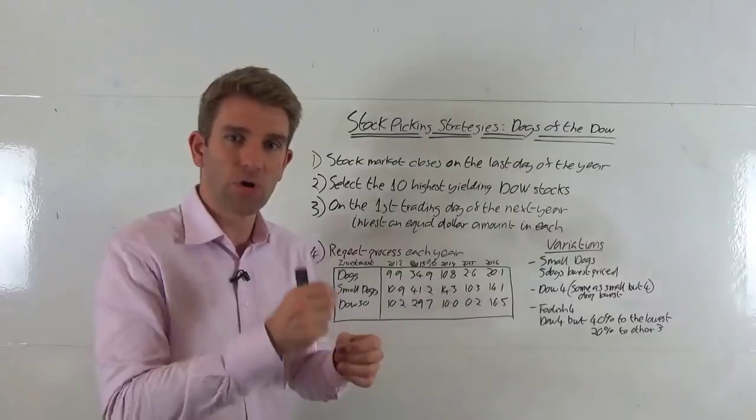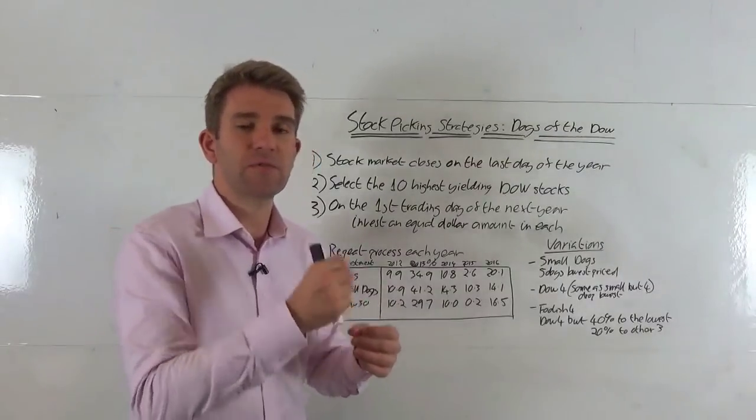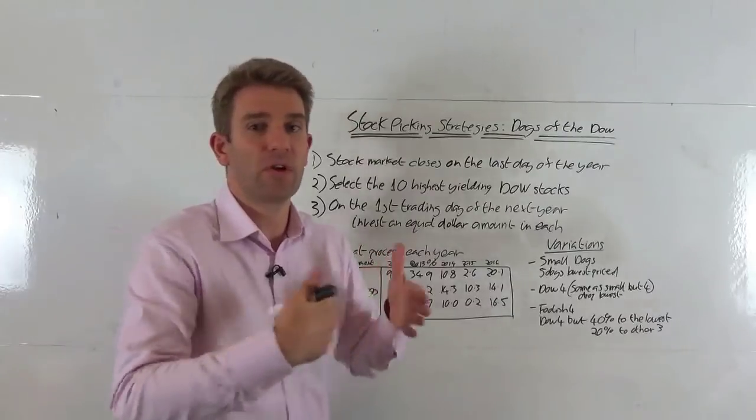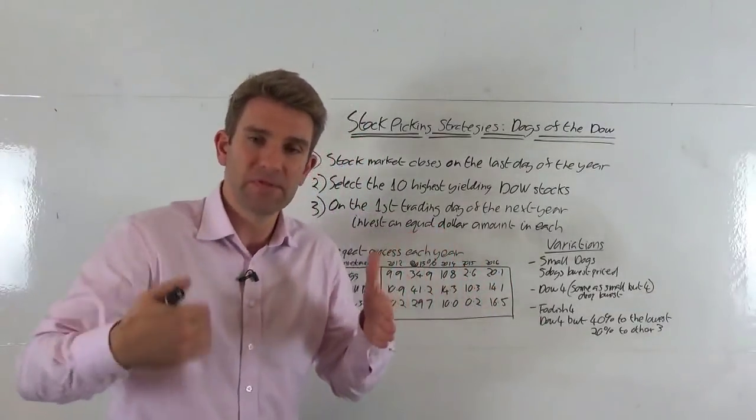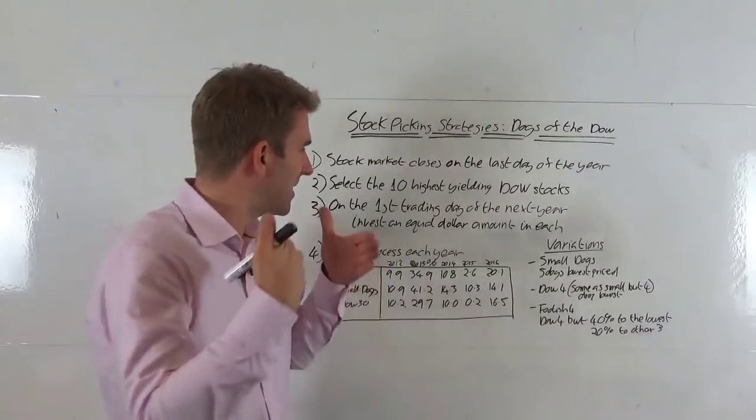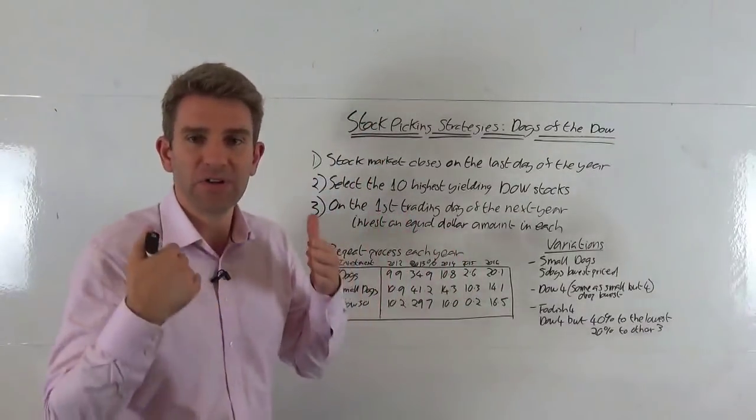Now if the stock stays in the dogs for the next year, we have to rebalance the portfolio out. So if we've increased the portfolio to 150 grand, then we still need to rebalance and put 10% into each. Some will drop out, some will come in, and we're still picking the 10 stocks with the highest dividend yield.